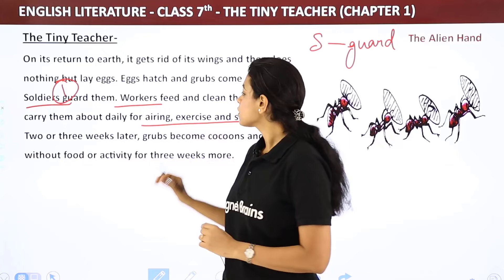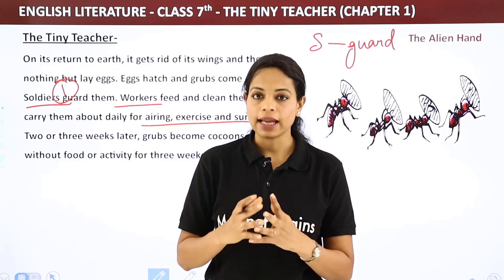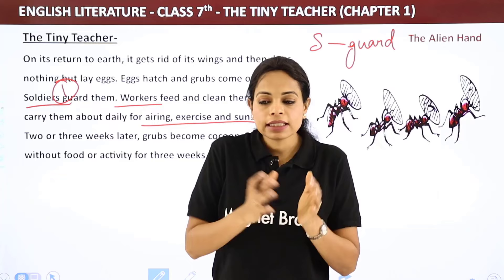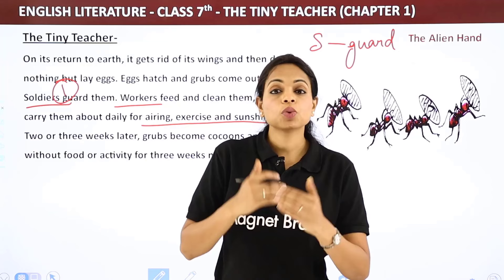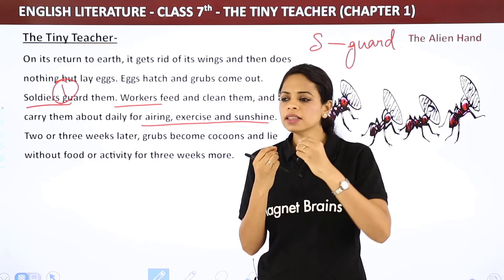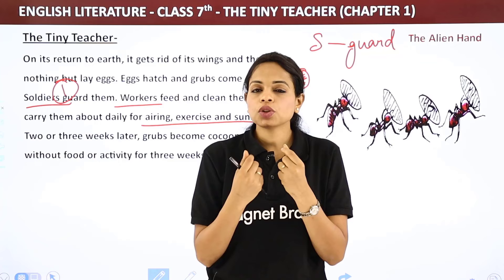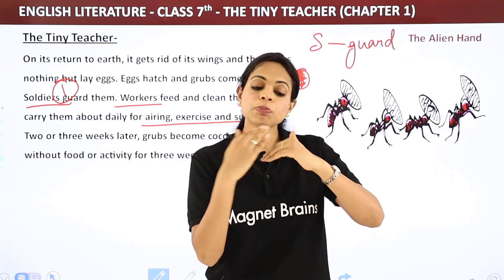Two or three weeks later, grubs become cocoons. After being fed and exercised, the grub wraps itself in a thin fabric-like covering made of its saliva — like a sleeping bag. This is called a cocoon. For the next three weeks, the cocoon lies without food or any activity. It is totally packed inside. Only the soldiers guard them during this time.